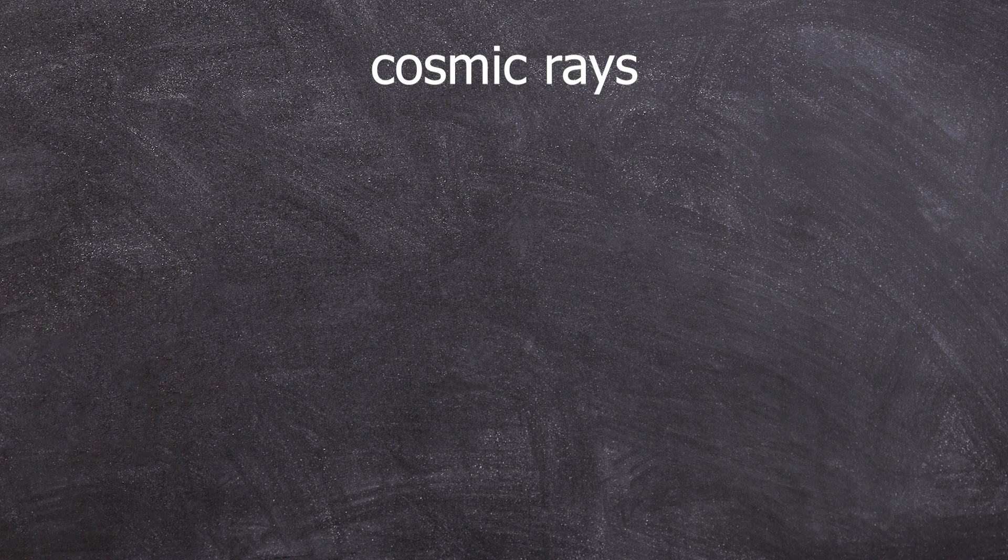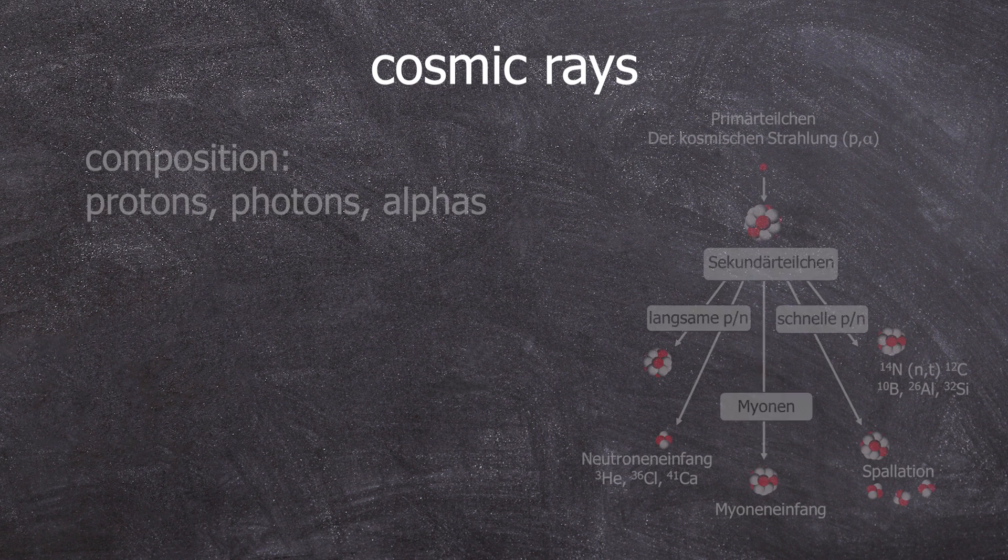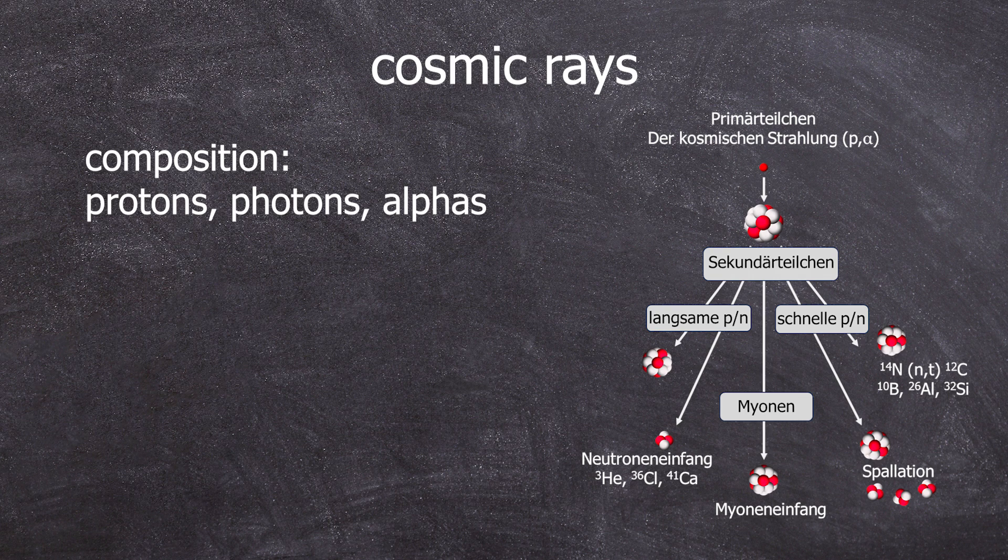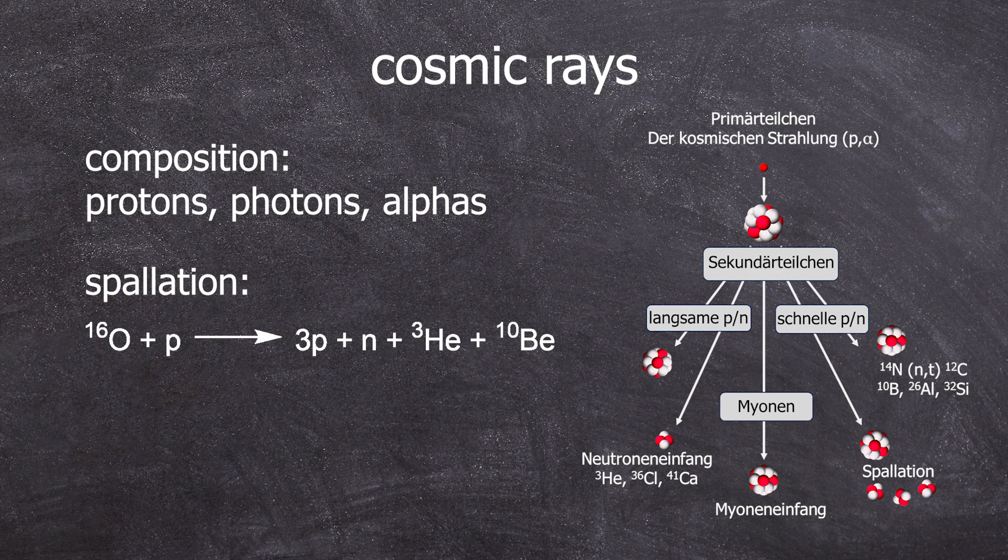Carbon-14 is created high in the atmosphere through cosmic irradiation. Cosmic radiation primarily consists of protons, high-energy photons, and alphas. Neutrons are not stable enough to survive the long journey from the sun to our earth. So, for example, one proton can break down an oxygen atom resulting in, for instance, three protons, a neutron...